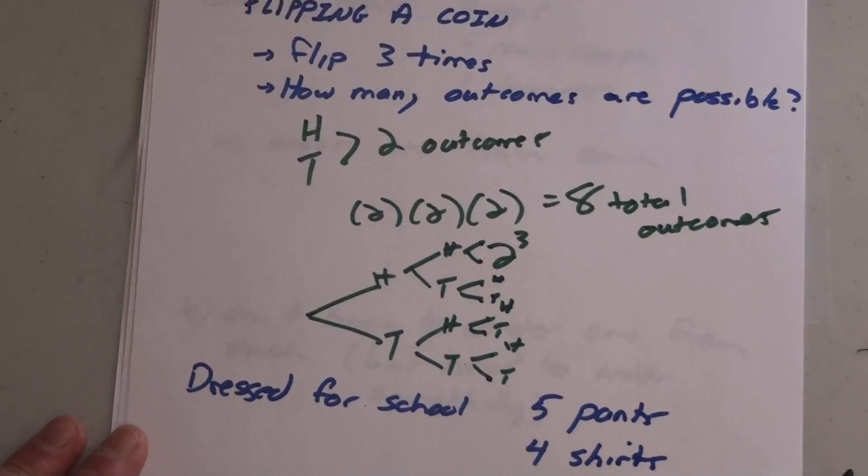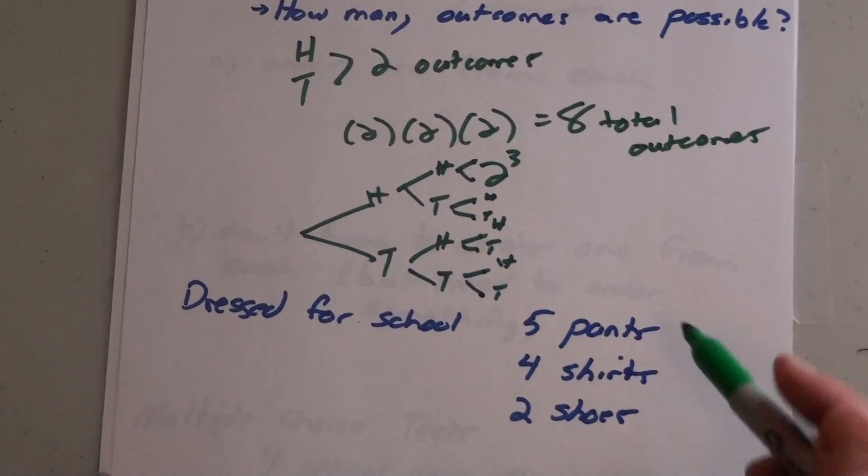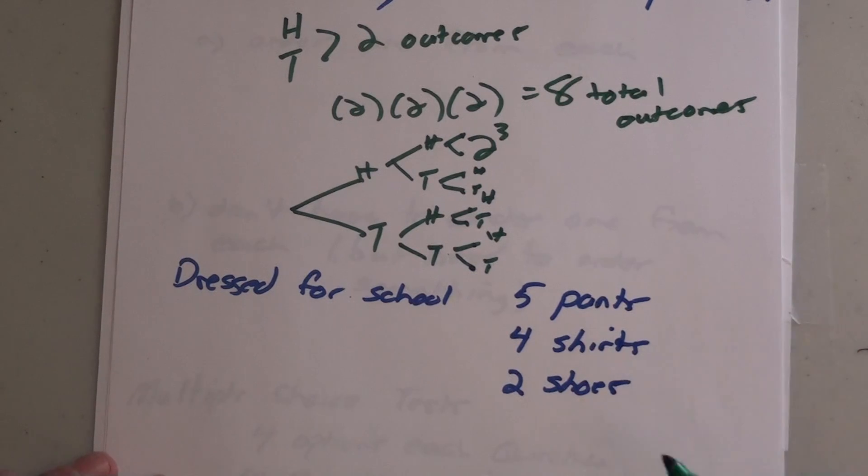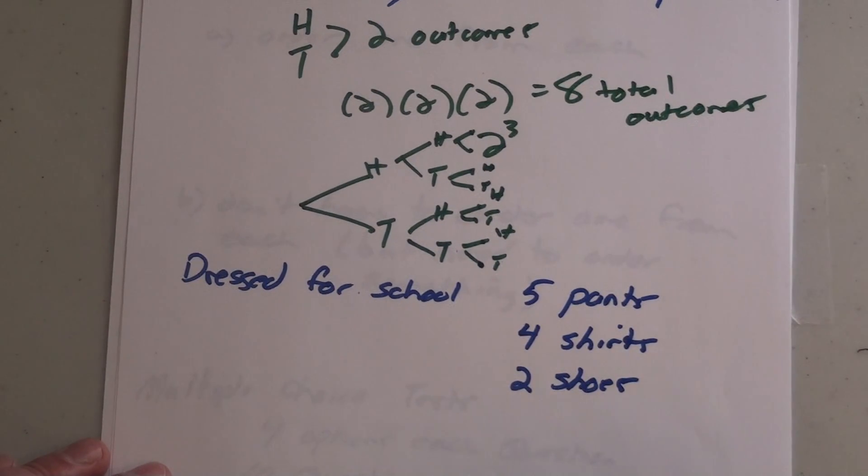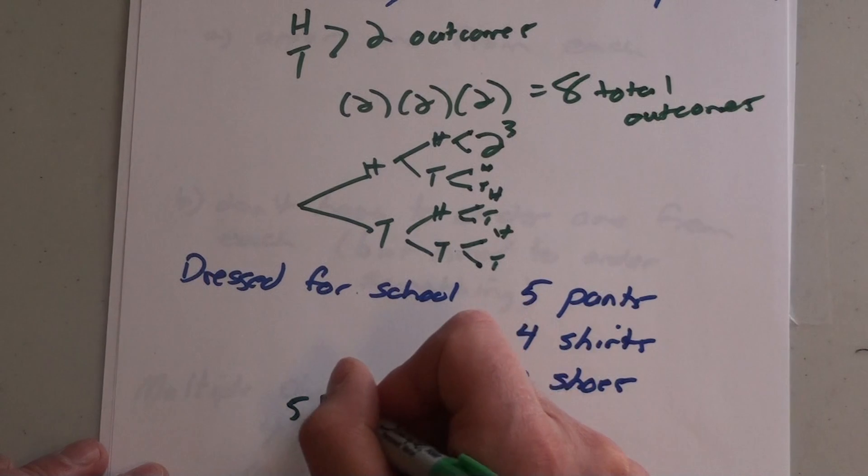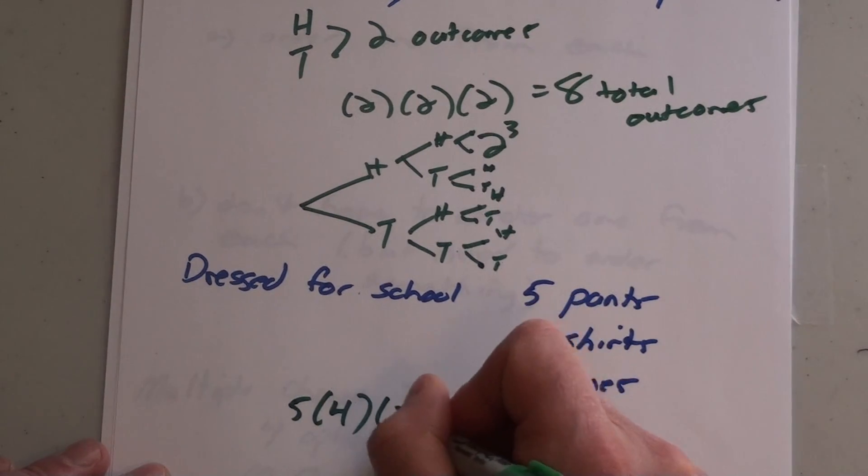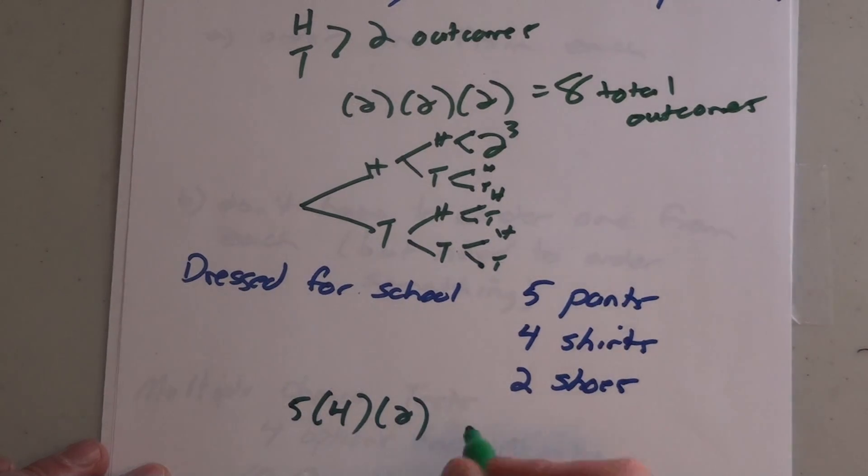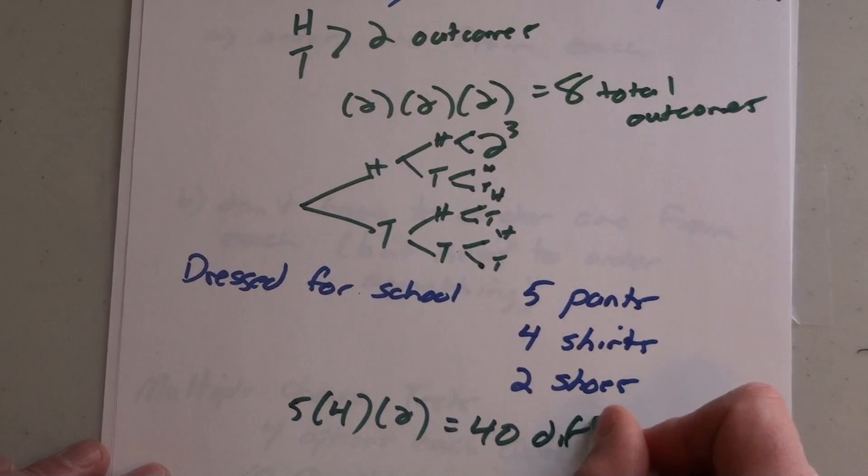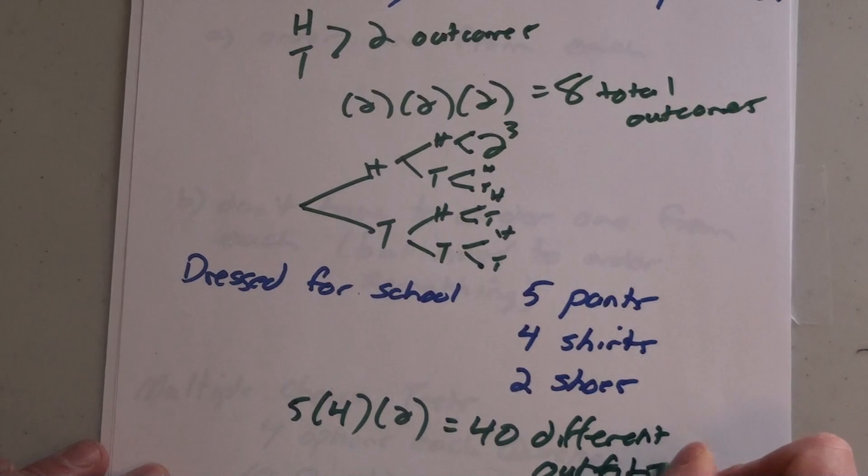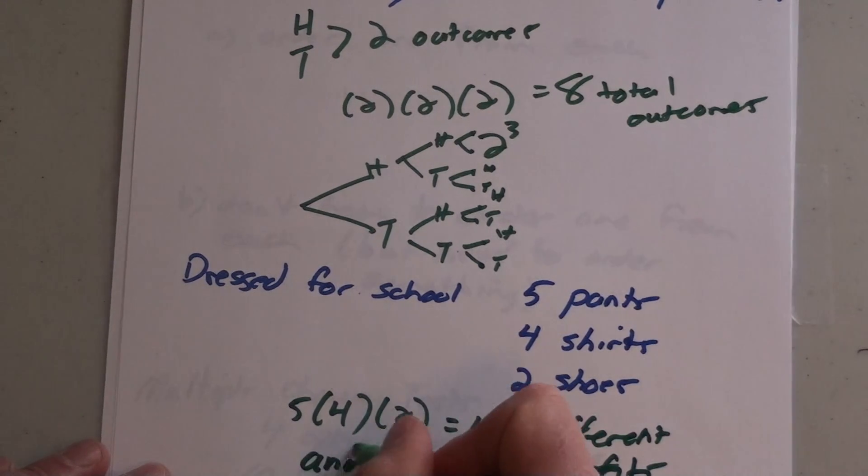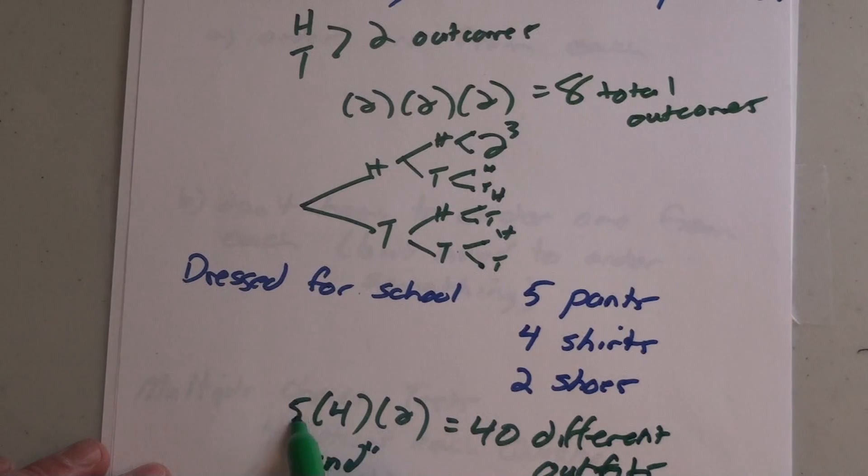Getting dressed for school, how many different clothing combinations can you have if you have five pants, four shirts, and two shoes that you're going to wear? I have five pants to choose from, then I need to wear shirts - times my four shirts - and then multiplied by my two shoes. Five times four is twenty, times two is forty. There's forty different outfits.